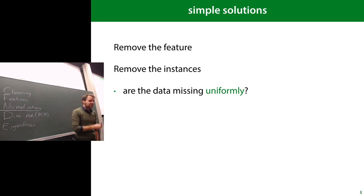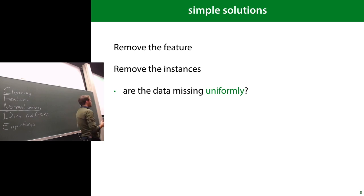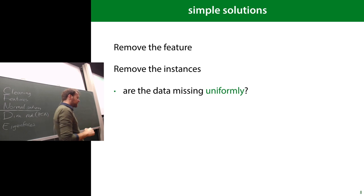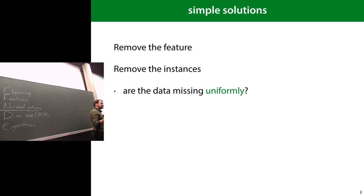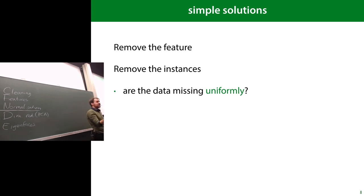The simplest solution if you have missing features is to just remove the feature — throw out that column. Maybe it's important and you don't want to do that, but if not, it's a very easy solution. You can also remove the instances — remove the rows with missing values — but there you have to be careful that you're not changing the data distribution. If instances are missing uniformly, removing them is fine.